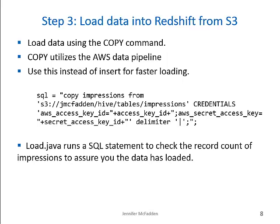Load.java is now ready to attempt to load the data using the SQL COPY command. The COPY command utilizes the AWS data pipeline and is recommended for faster loading than the INSERT command. Load.java will output a count of the impressions and clicks tables after loading them to assure you that the data has loaded. If you get errors — and you probably will at first — you can check the STL_ERROR table by running SELECT * FROM STL_ERROR in SQL Workbench. Common errors include mismatched type and not enough space in the column for the data attempting to load. When you get an error, the data load will stop — it won't skip that record and move on. I found it cleanest just to drop the entire table and start the program over again after making an adjustment. This program took about two to three minutes to load this sample data.